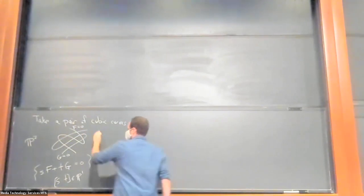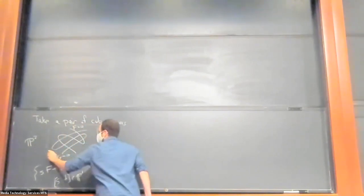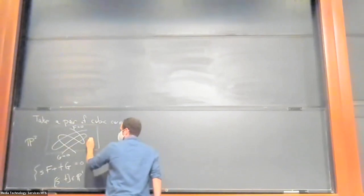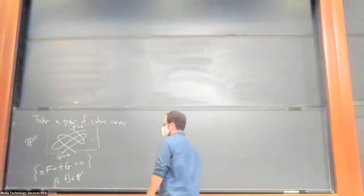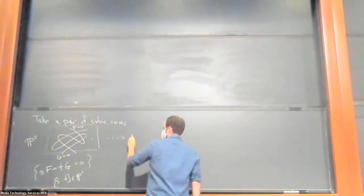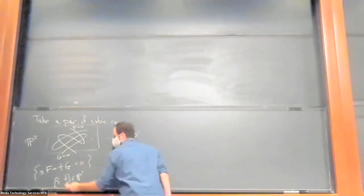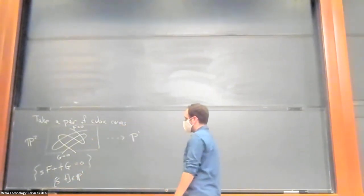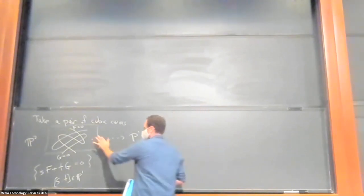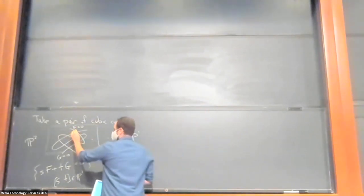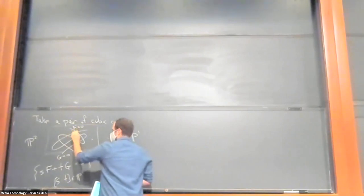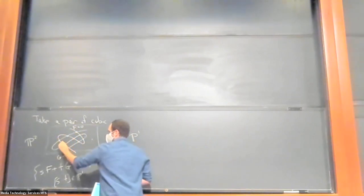So for a generic point in P2, it only lies on one of these cubics from the pencil. So there's a rational map from P2 to P1. It just sends a point out here to the S and T corresponding to the cubic curve on which it lies. But this map is obviously not defined everywhere because there are these nine base points. So the intersection points of the two initial cubics are going to lie on every cubic in the pencil.